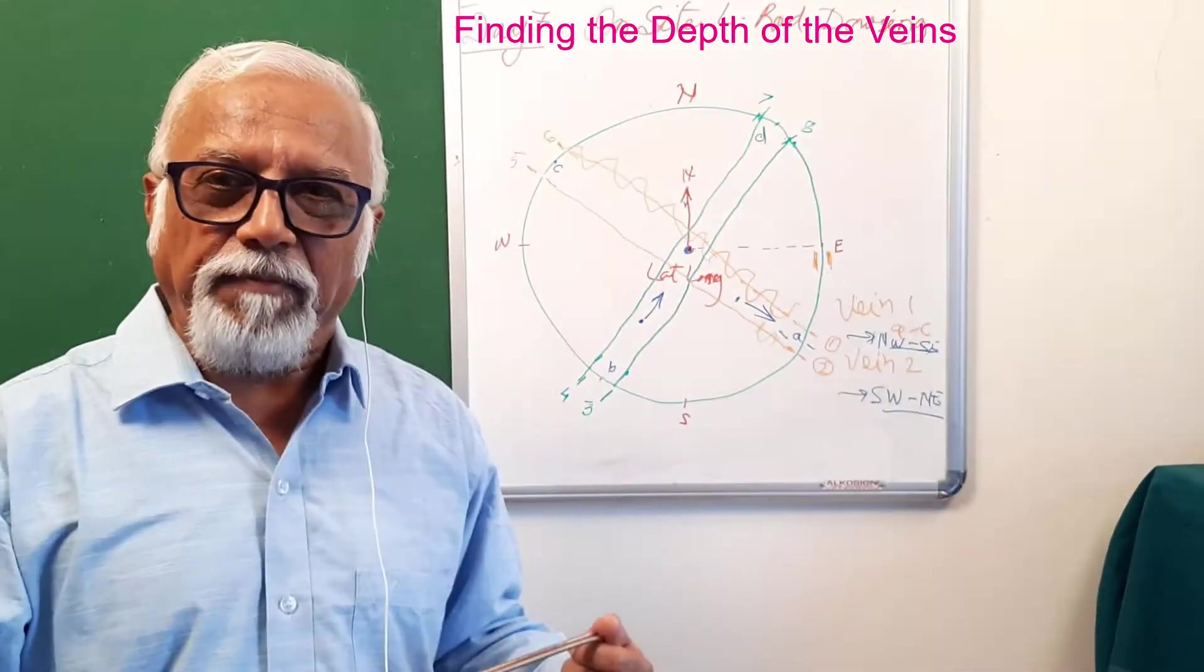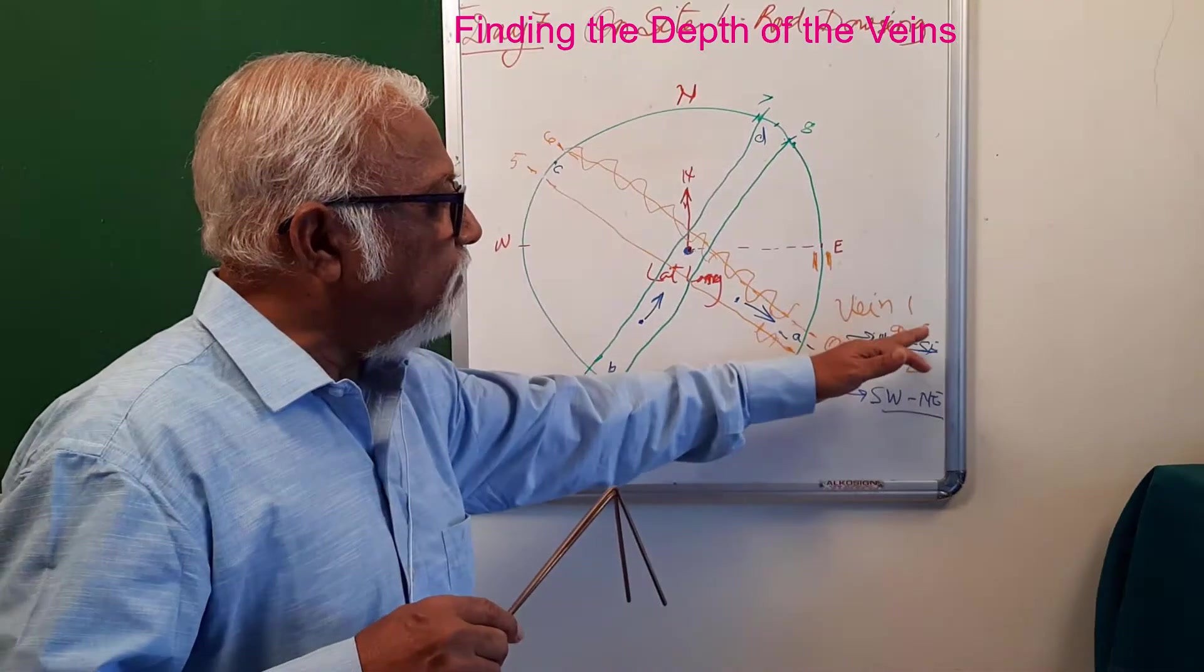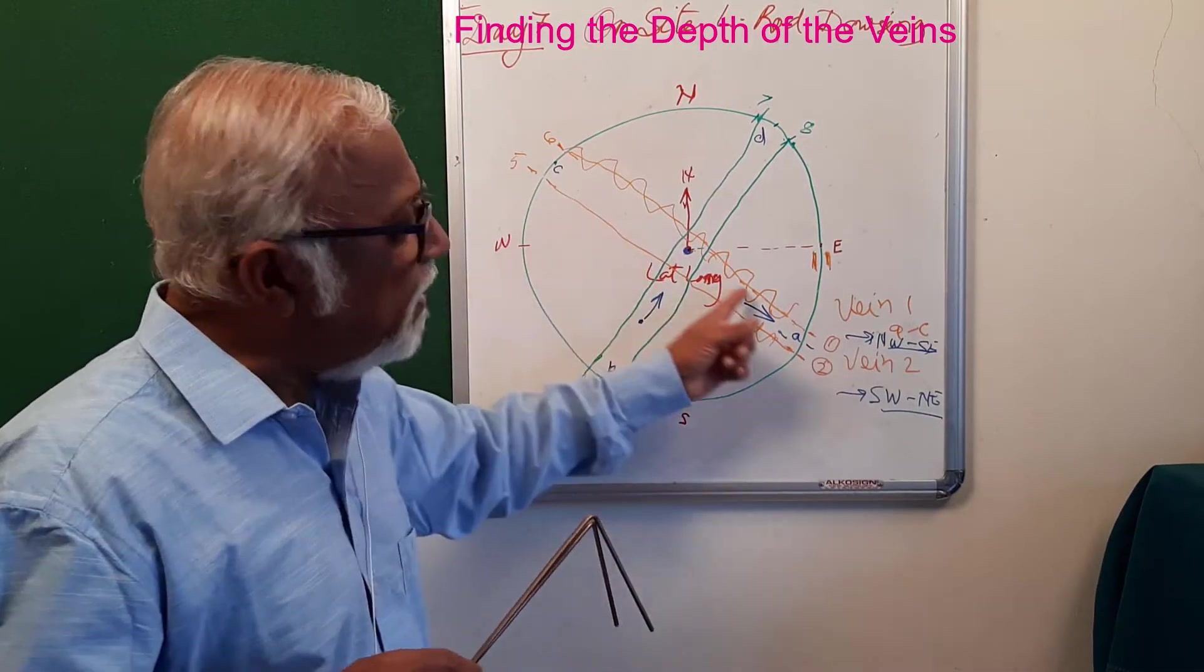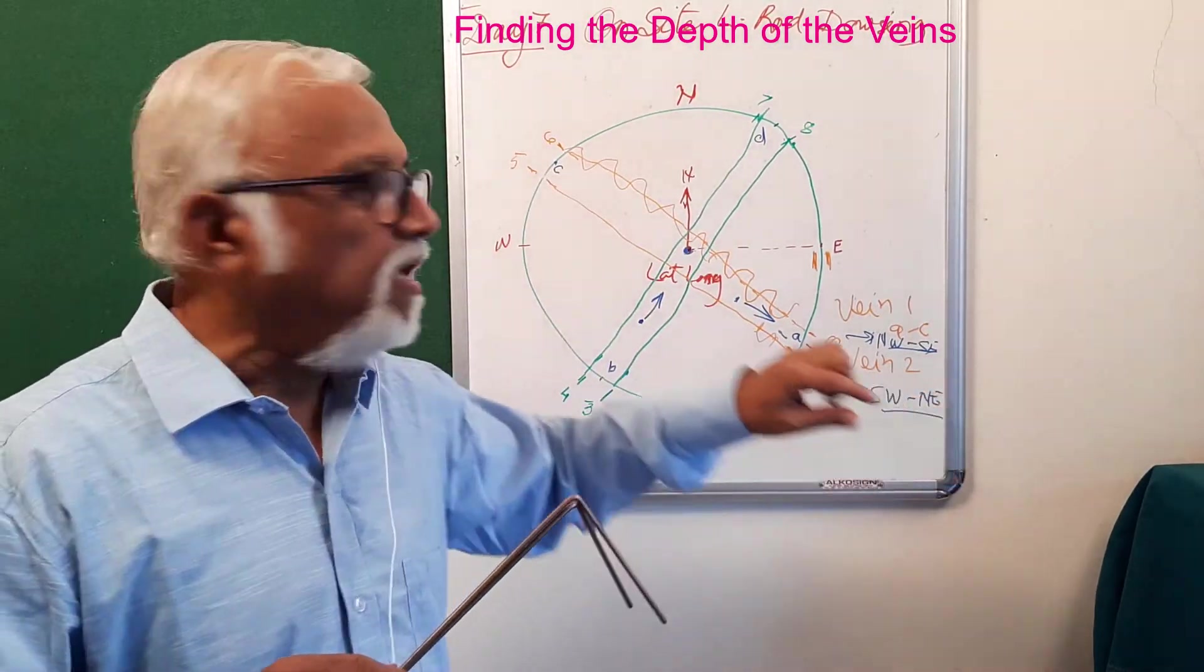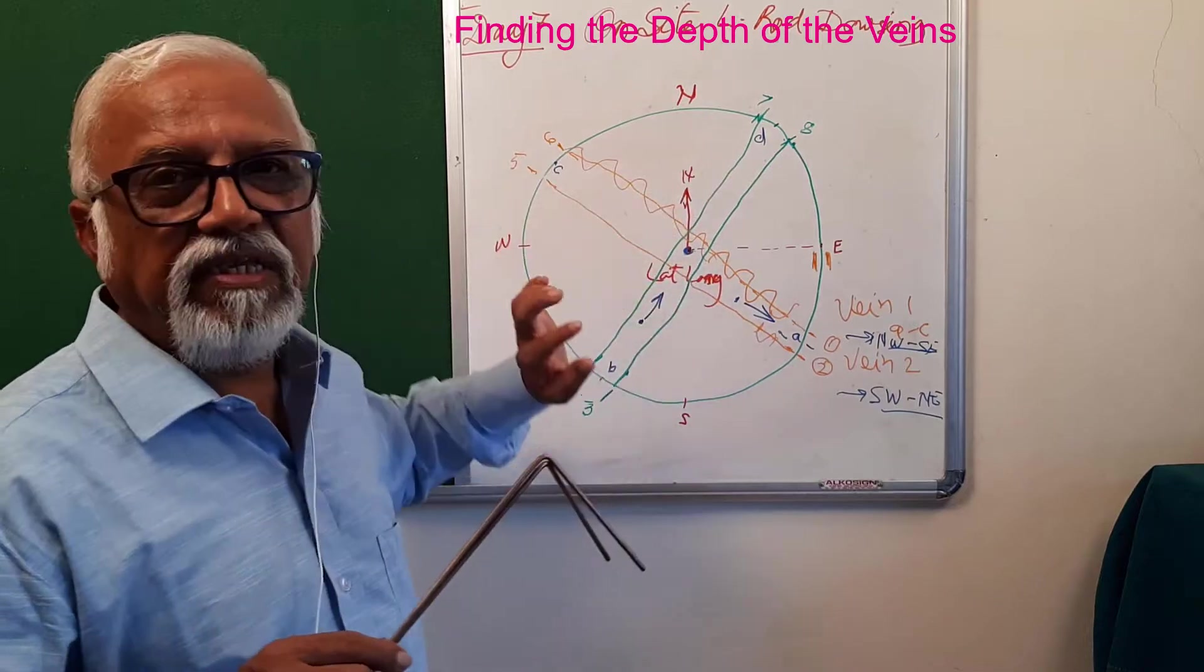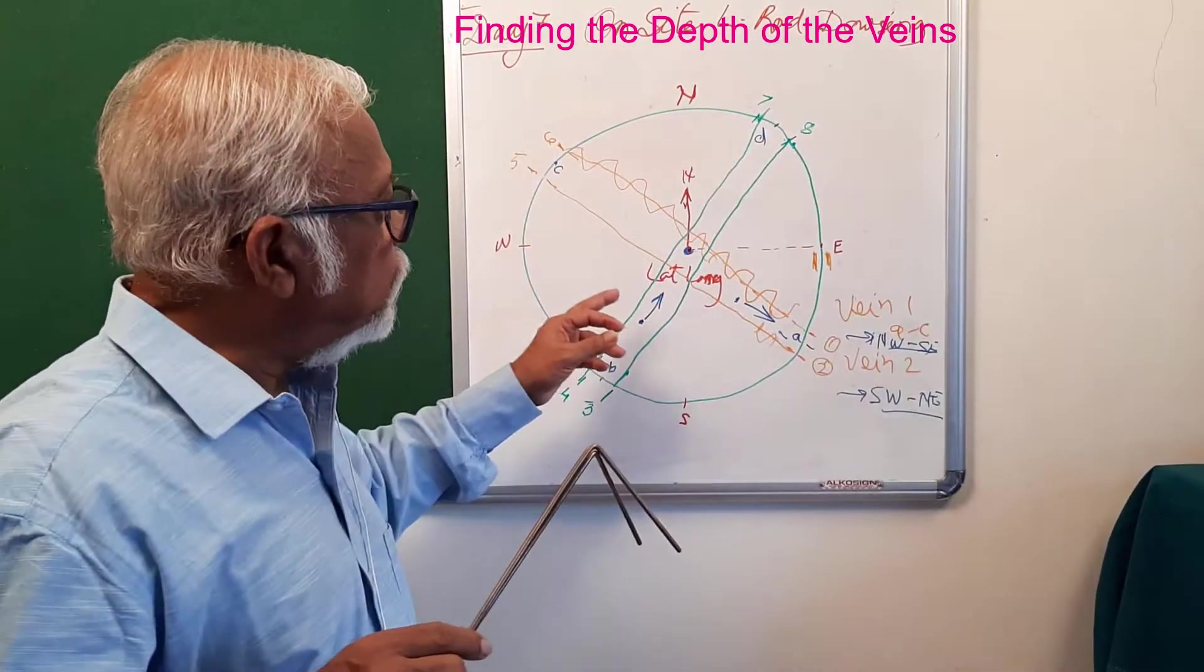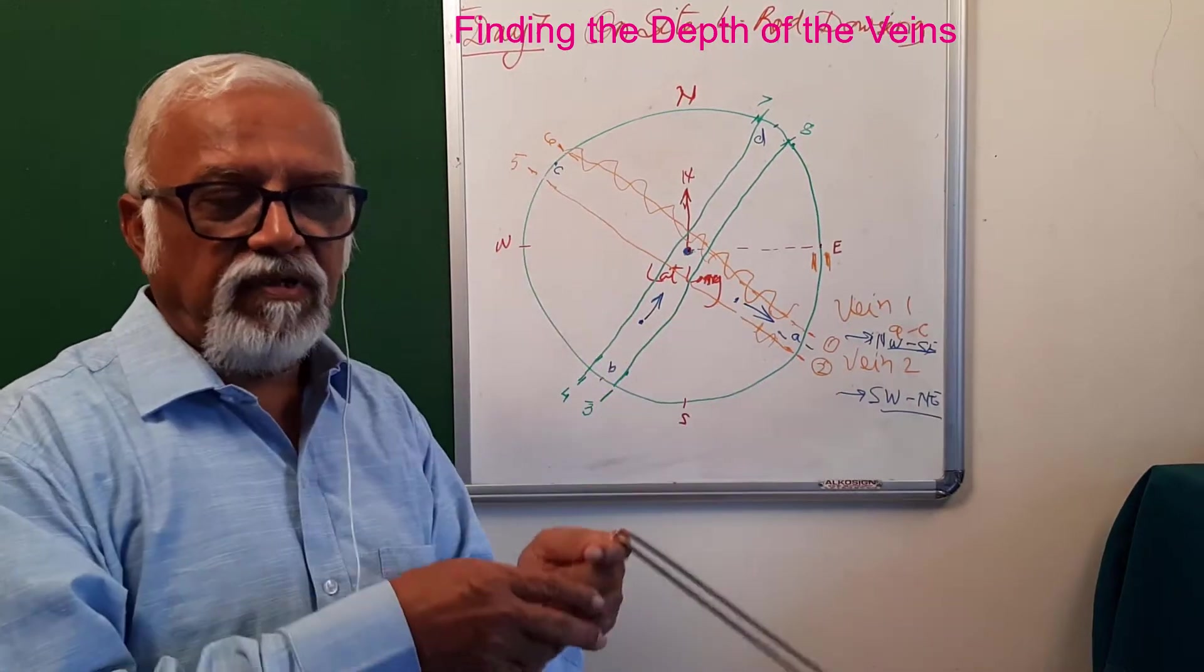Finding the depth. So for vein number one, you stand on the same point or anywhere on the vein, but not where both veins cross.